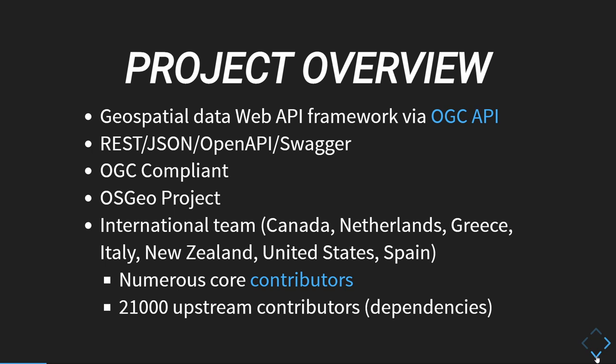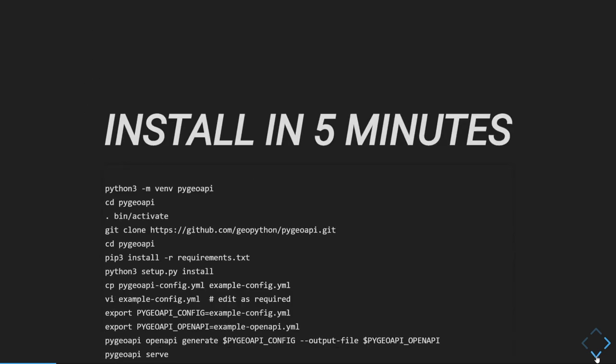The PyGeo API project itself is a geospatial data API framework that specializes in all the OGC API standards. That is our bread and butter. We support and are compliant with the OGC API standards and we are also a reference implementation. We have a large international team across many time zones and numerous contributors from all over the world. Like many open source projects, we leverage a lot of other open source projects which help us achieve our goal faster.